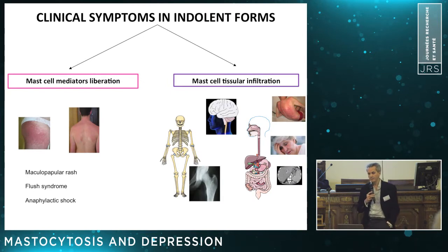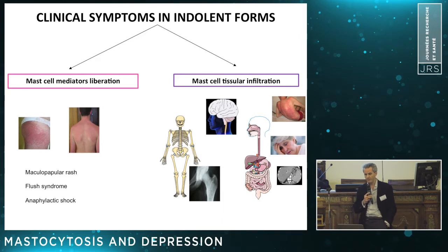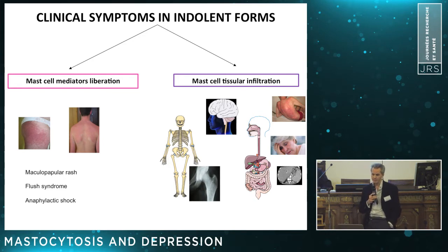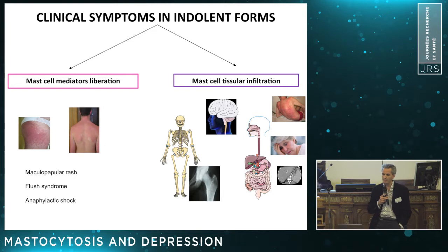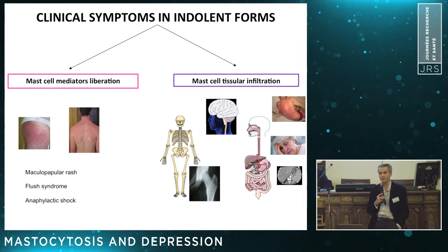What about the clinical symptoms in indolent forms of mastocytosis? There are two types of symptoms: those related to mast cell mediator release — for instance, maculopapular rash, flush syndrome, or even spontaneous anaphylactic shock — and, on the other side, mast cell tissue infiltration in virtually any organ.